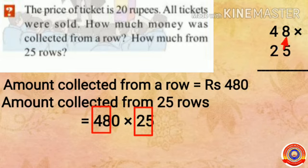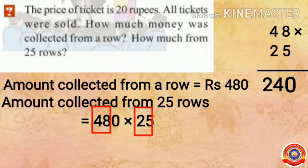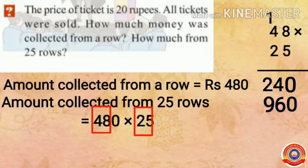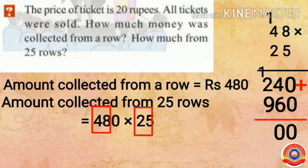Multiply 48 and 25: 5 into 8 is 40, write 0 and carry 4. 5 into 4 is 20, plus 4 is 24. Next, 2 into 8 is 16, write 6 and carry 1. 2 into 4 is 8, plus 1 is 9. Put 0 here and add together: 0 plus 0 is 0, 6 plus 4 is 10, write 0 and carry 1. 9 plus 2 is 11, plus 1 is 12.